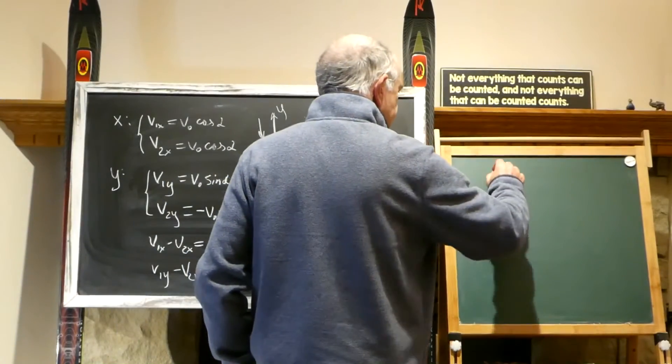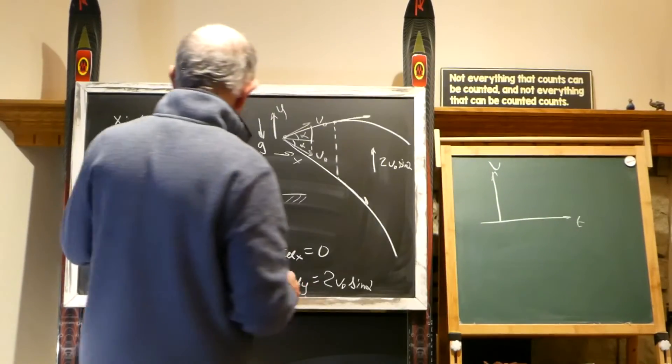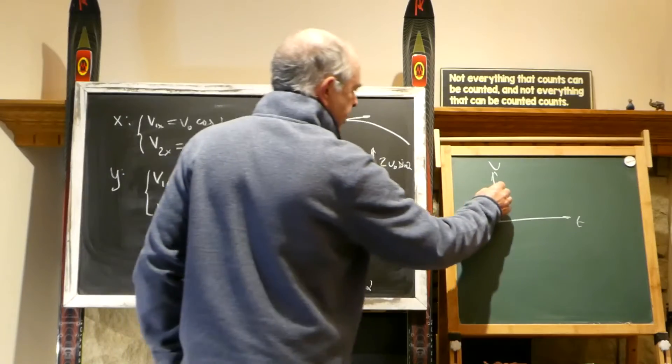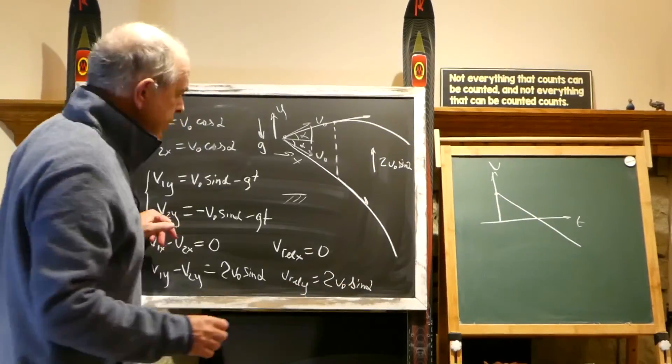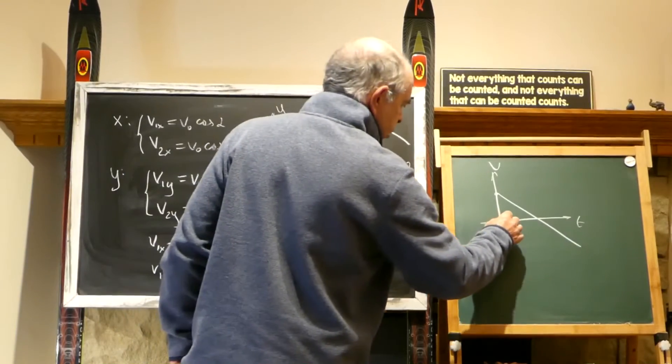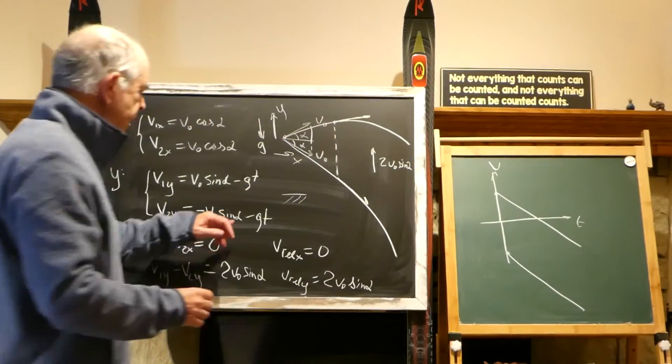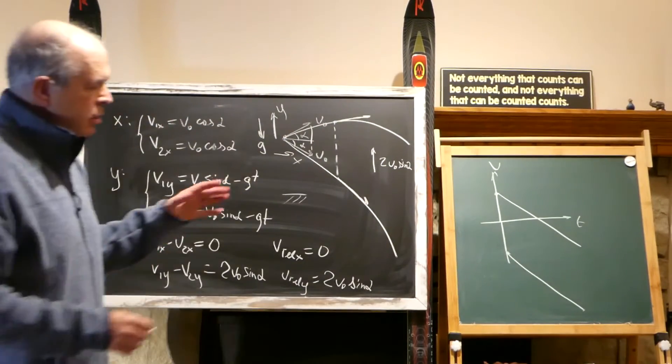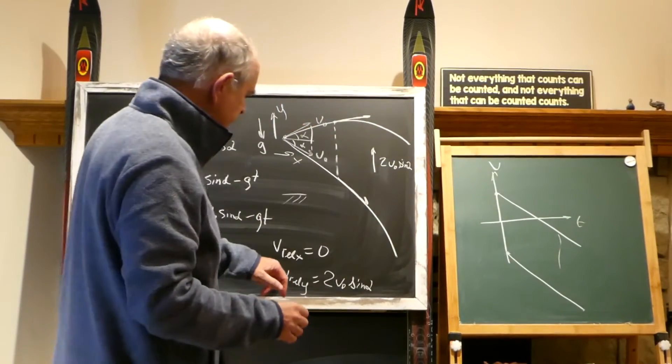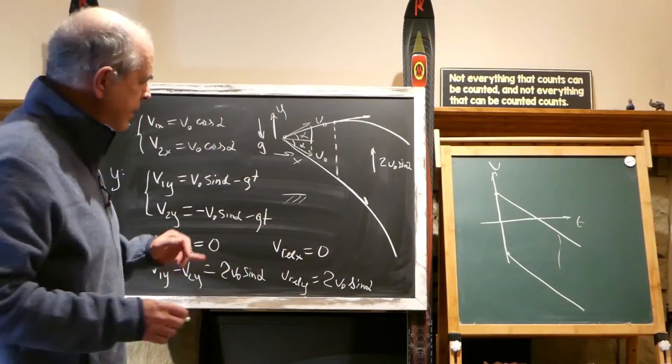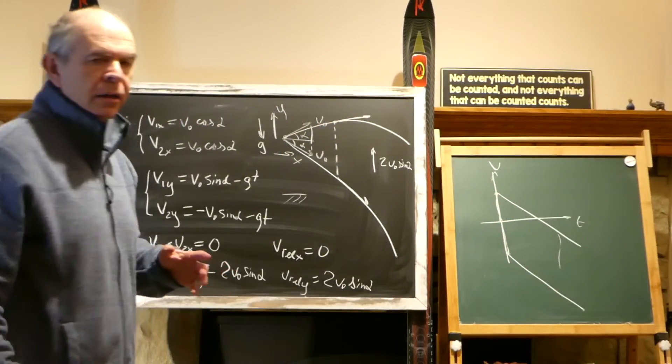If we draw a line v and this would be time, the first one is starting with some speed and it's decreasing. And the second one is starting already with negative speed the same, and it's decreasing with the same rate. gt is the same. So if we subtract those, this distance, which is relative speed, delta v would be always the same. And it would be this plus this, which is 2v0 sin alpha.